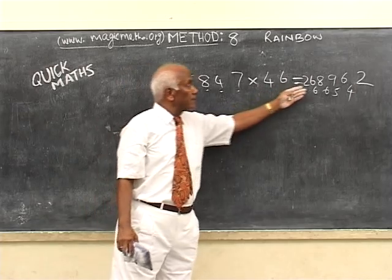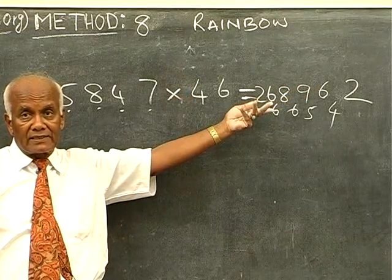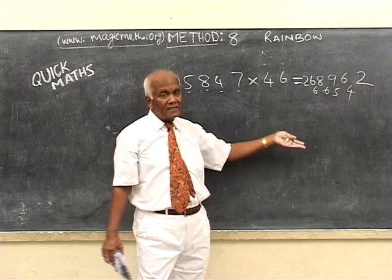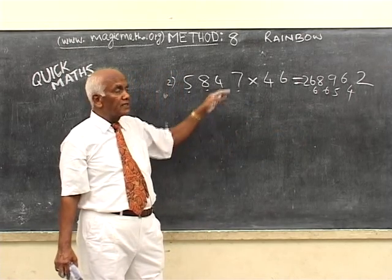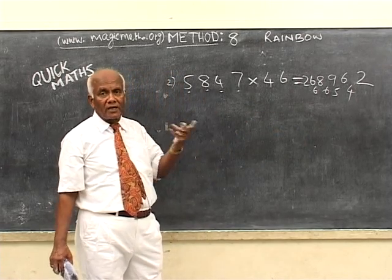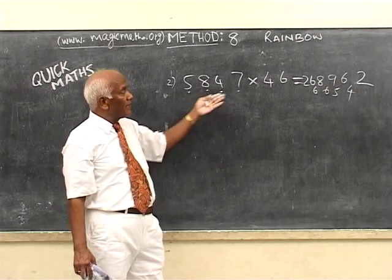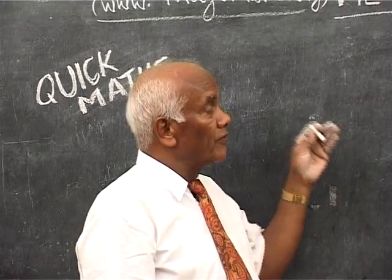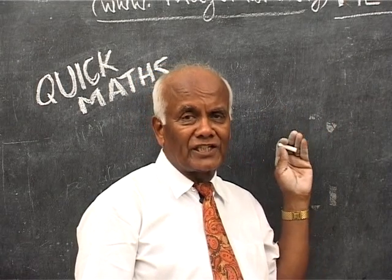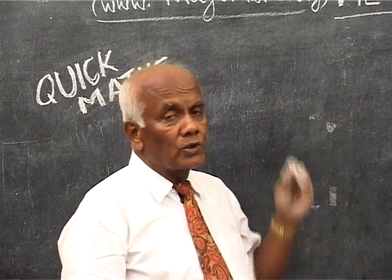So the answer is 268962. Can you believe you have done such a big number in one step — mentally? Yes, you can do it. Learn it, master it. Of course, the day you learn to ride a cycle, you cannot go on a race — so you can't do it fast yet. But you should be able to do it within 10 seconds once you practice enough. Now we have seen reasonable multiplication methods. We shall move on.